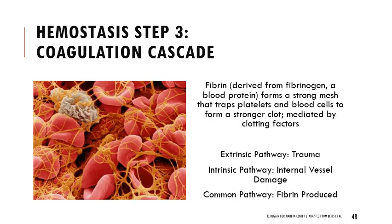Finally, the coagulation cascade occurs — a series of signals and effects. The plasma protein fibrinogen is converted to fibrin, which forms a strong mesh that traps platelets and blood cells to make a stronger clot, mediated by different clotting factors. The cascade differs depending on the type of injury: extrinsic pathway for external trauma, intrinsic pathway for internal vessel damage, and both converge on a common pathway for fibrin production. The detailed pathways are in the earlier diagram but you don't need to memorize them.